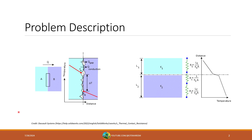Thermal contact resistance arises because we never have perfectly flat and smooth materials. When we take two materials, for example material A and material B, and put them into contact, there are going to be small gaps and voids between that contact line. Those gaps and voids can lead to a thermal contact resistance, which will change the temperature as we transition from material A into material B. If we want to do accurate simulations of conduction between two solids, we're going to have to account for the thermal contact resistance at this contact point.